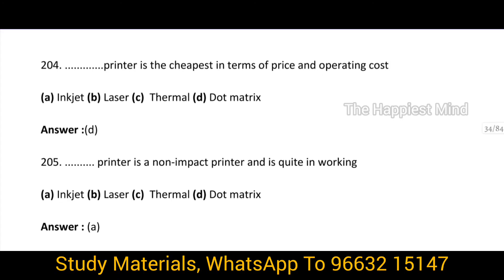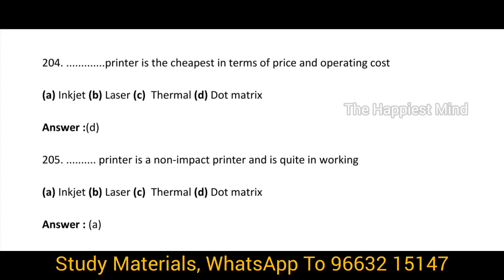Question 204. What printer is the cheapest in terms of price and operating cost? Your answer is option D, dot matrix. These are the printers which are cheapest in terms of price and operating cost.